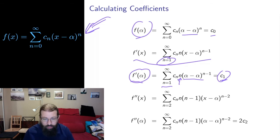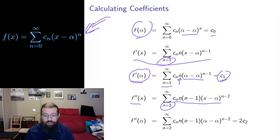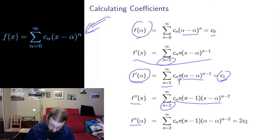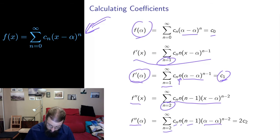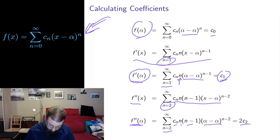Let's keep going — perhaps you can see the pattern developing. If I differentiate again, term by term, I'm now starting at n equals 2 because the n equals 1 constant term from the previous step gets destroyed. If I evaluate this at alpha, I again have alpha minus alpha, so I only have the constant term, which is the n equals 2 term. That gives me C2 times 2 times 1, which is 2·C2. So to calculate the coefficient C2, it's related to the second derivative at the center point, but there is this factor of 2 involved.